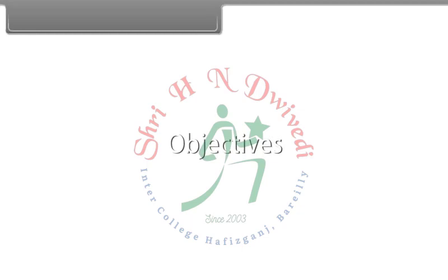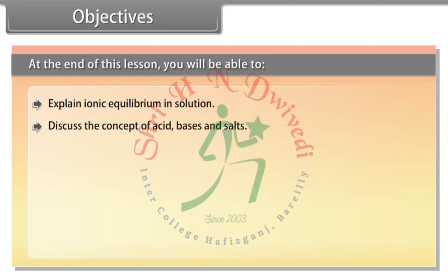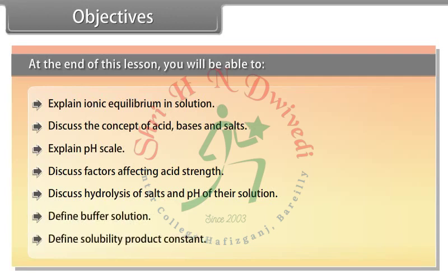At the end of this lesson you will be able to: explain ionic equilibrium in solution; discuss the concept of acids, bases, and salts; explain the pH scale; discuss factors affecting acid strength; discuss hydrolysis of salts and the pH of their solutions; define buffer solution; and define solubility product constant.